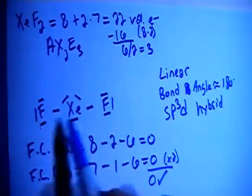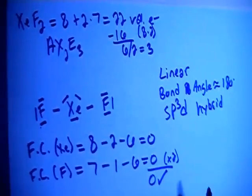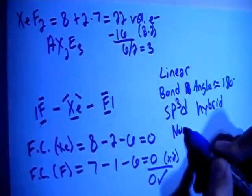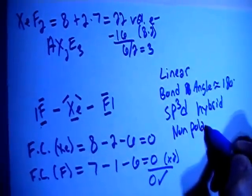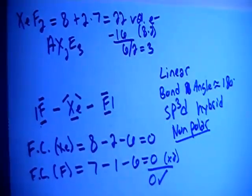And because this is linear, and these are both the same atom, they're both fluorines, their dipole moments will cancel each other out, making this a non-polar compound. That is pretty much it for this one.